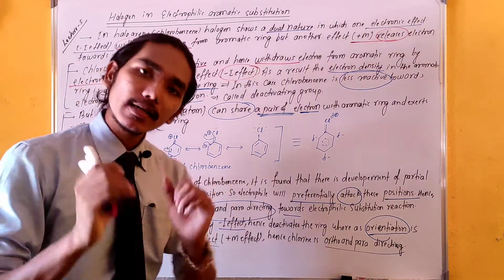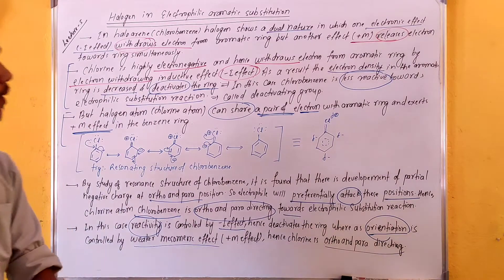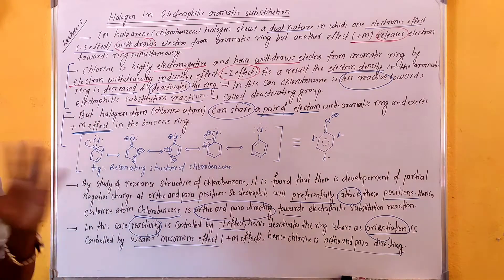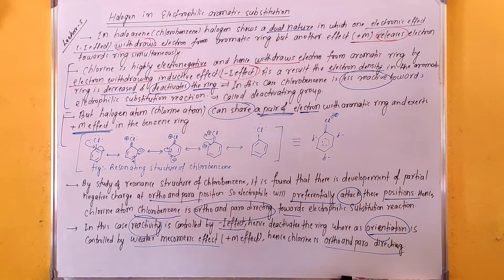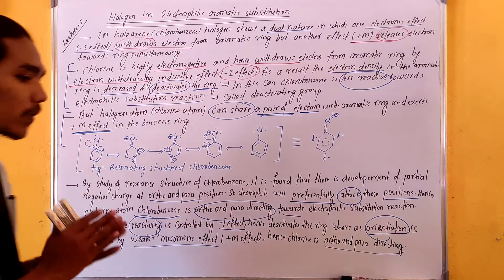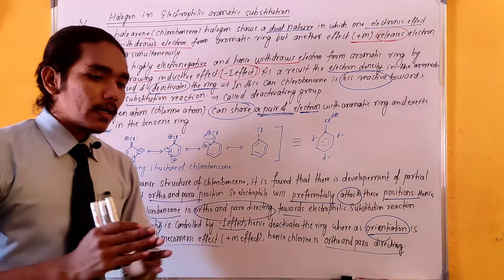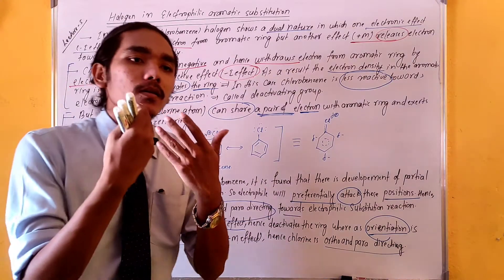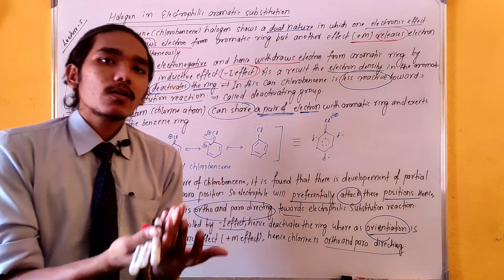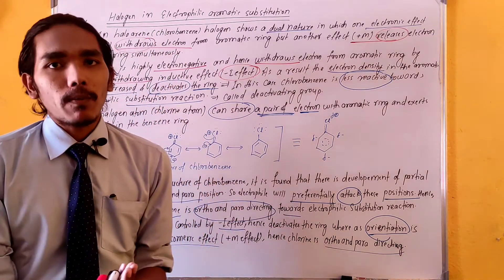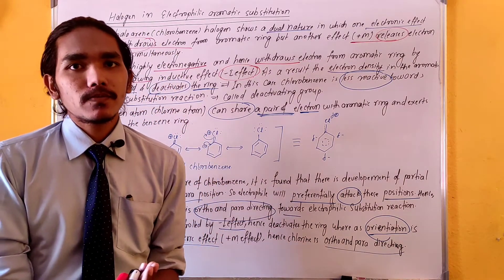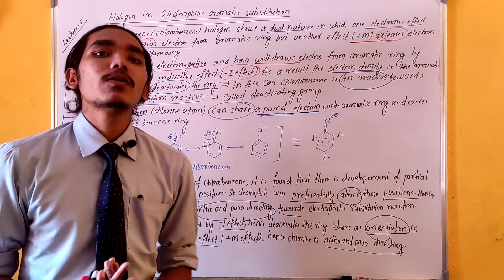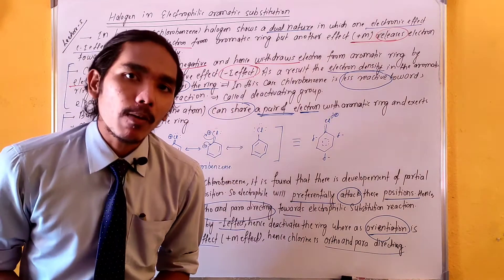So, to summarize: chlorine acts as both an electron-withdrawing group and an electron-releasing group in electrophilic aromatic substitution reactions.